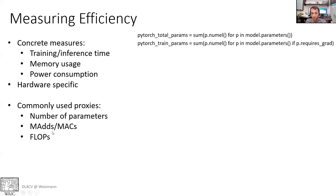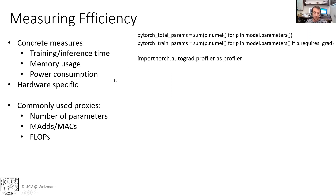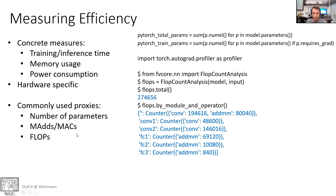Another commonly used proxy is the number of multiply-accumulate operations, since those dominate both memory and inference time in models based on convolutions or fully connected layers. To calculate this in PyTorch you can use a profiler. Another very commonly used proxy is the number of floating point operations (FLOPs). For FLOPs, there are biased estimates, but the most accurate library I've found is fvcore from Facebook — you import flop_count_analysis and can get the flop count per layer or total.